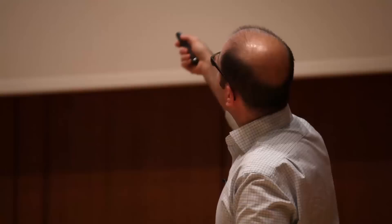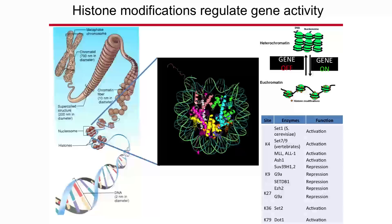If histone proteins are modified in a way that makes them compact, genes can no longer be activated. If they are loosened and relaxed, genes can be accessed. There are enzymes that modify these histone proteins and regulate gene activity. Because during the transition from skin cell to stem cell many genes are turned on and off, we think that some proteins regulating histones might be important for this reprogramming process.